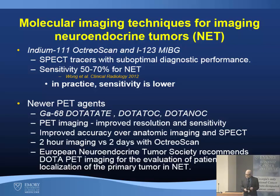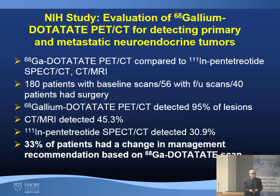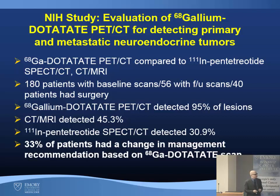The European Neuroendocrine Tumor Society recommends DOTA-PET imaging for evaluation of patients and localization of the primary tumor. An NIH study evaluated gallium-68 dotatate PET and compared it to conventional imaging including octreoscan, CT, and MR in 180 patients. Dotatate PET detected 95% of lesions, while CT and MR detected about 45%, and octreoscan even less. In this study, 33% of patients had a change in management based on the dotatate PET.